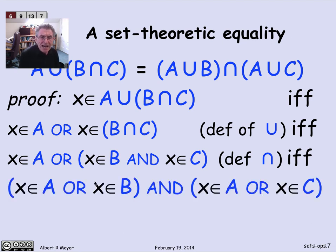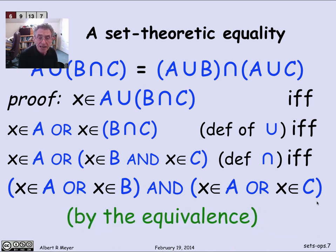Now at this point, I can immediately apply my propositional equivalence and say that the assertion x is in A or x is in B and x is in C holds if and only if this expression x is in A or x is in B and x is in A or x is in C. Why is that? Well, I'm just invoking the propositional equivalence. Let's look at it.